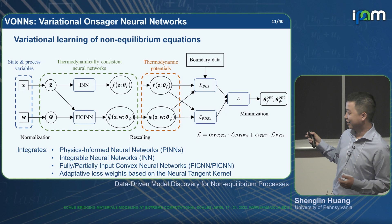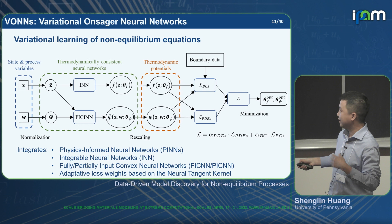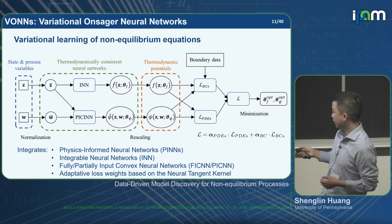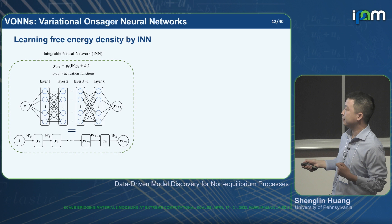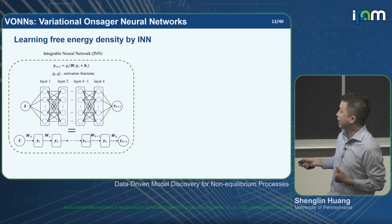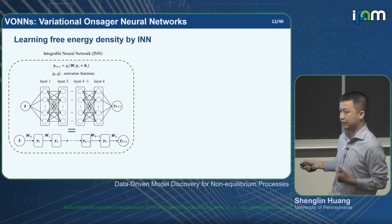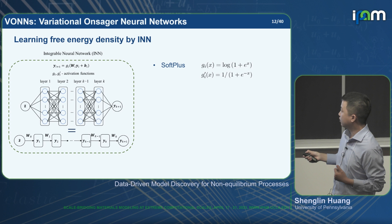These techniques are all existing — not proposed by us — but we combine all of them together into our system. More specifically, for learning free energy we use the integrable neural network. This is basically a fully connected feedforward neural network, with the only difference being the activation functions: we require that the derivative of the activation function itself is an activation function, so we use the softplus activation function because its derivative is the sigmoid.